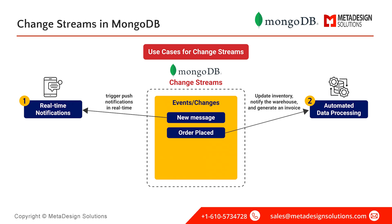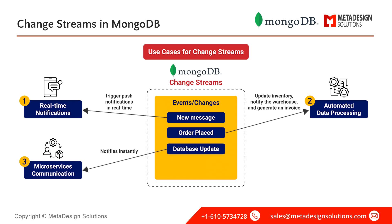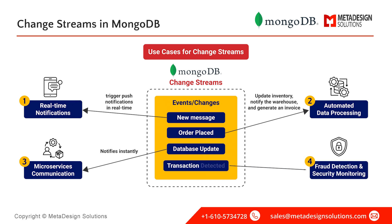For automated data processing, in an e-commerce system when an order is placed, change streams can trigger a workflow to update inventory, notify the warehouse, and generate an invoice — all without manual intervention. Many modern applications also rely on microservices, which must stay in sync. Change streams can ensure seamless communication between different services by propagating database updates as events.